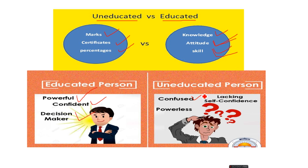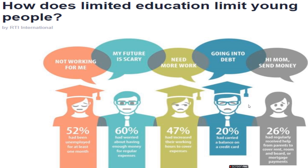Uneducated people are always seeking help from everybody — can I do this, should I do this — because they are not taking proper decisions. They don't understand what is right, what is wrong, what is ethical, what is unethical, what is good for their future. They feel powerless, always seeking help from others, lacking self-confidence. When an educated person feels very comfortable taking wise decisions to make their career successful, uneducated people feel uncomfortable.